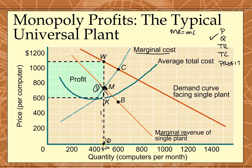Step three: find price by going up from the output quantity until you hit the demand curve. Step four: from that point on the demand curve, move horizontally to establish the price charged for this output — roughly $1,100. So we're charging roughly $1,100 and producing roughly 500 units.